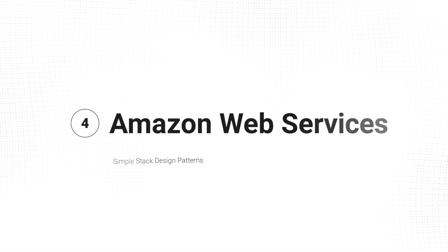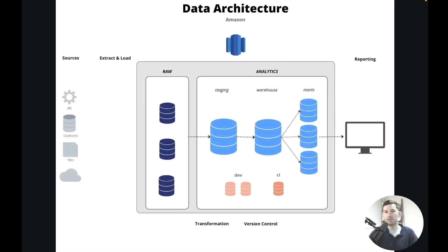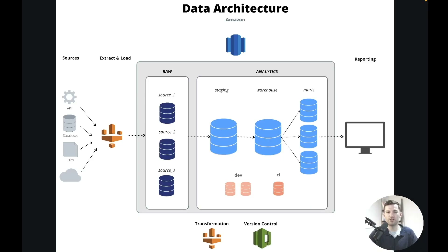Now let's look at AWS. For Amazon, you could have Amazon Redshift as the database server. You could use AWS Glue as a platform to extract, load, and ingest that data — similar to Data Factory — and use Glue again for transformation. For version control, their internal Git service called CodeCommit handles Git tracking, and QuickSight is their visualization tool. All of this under AWS, or you can swap some of these things out.